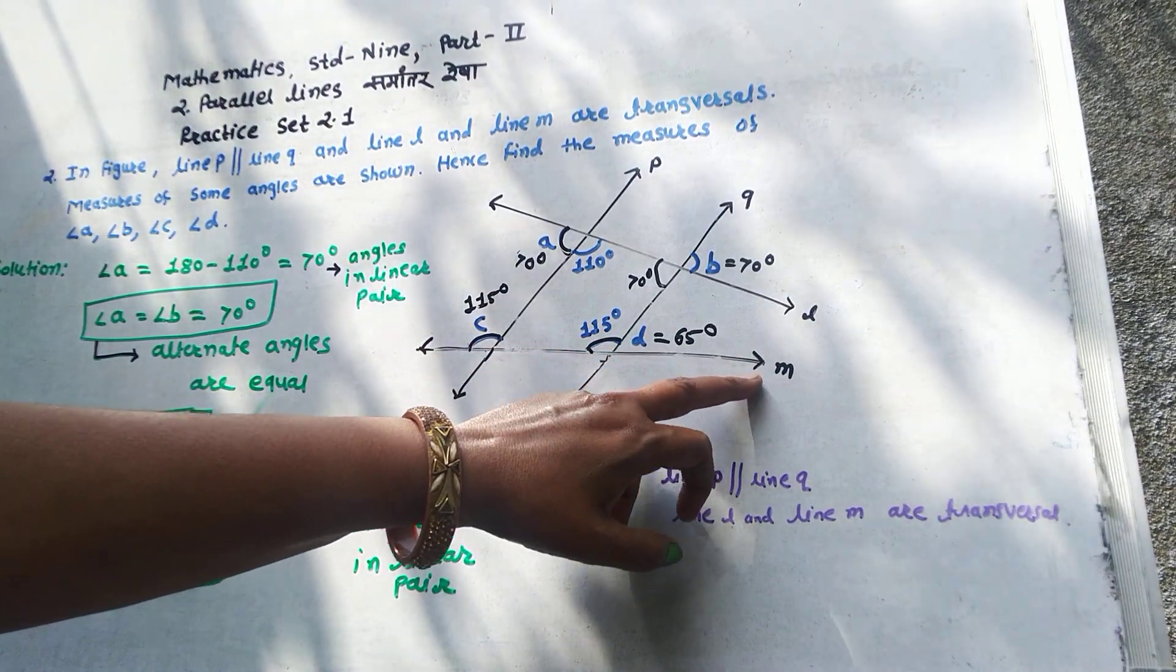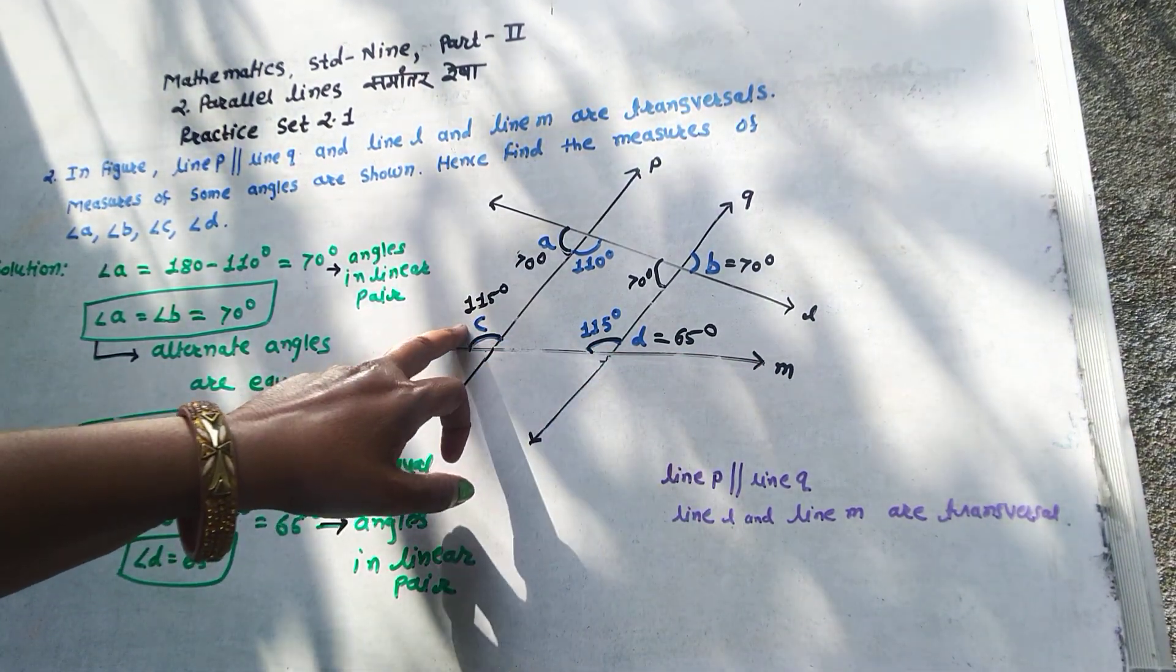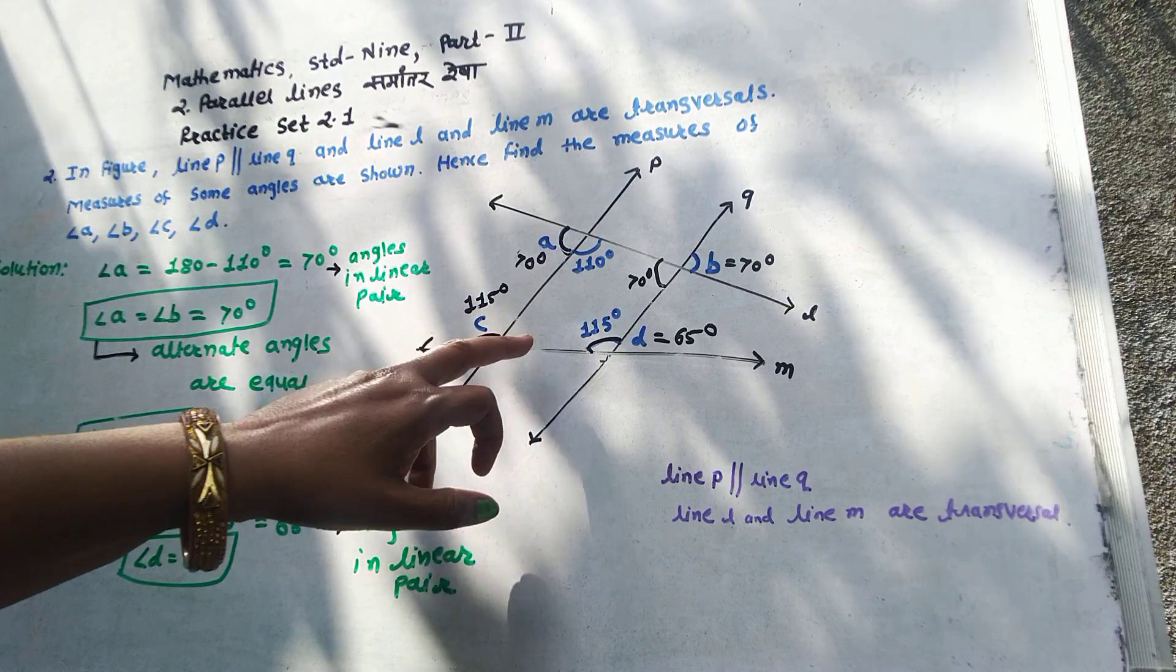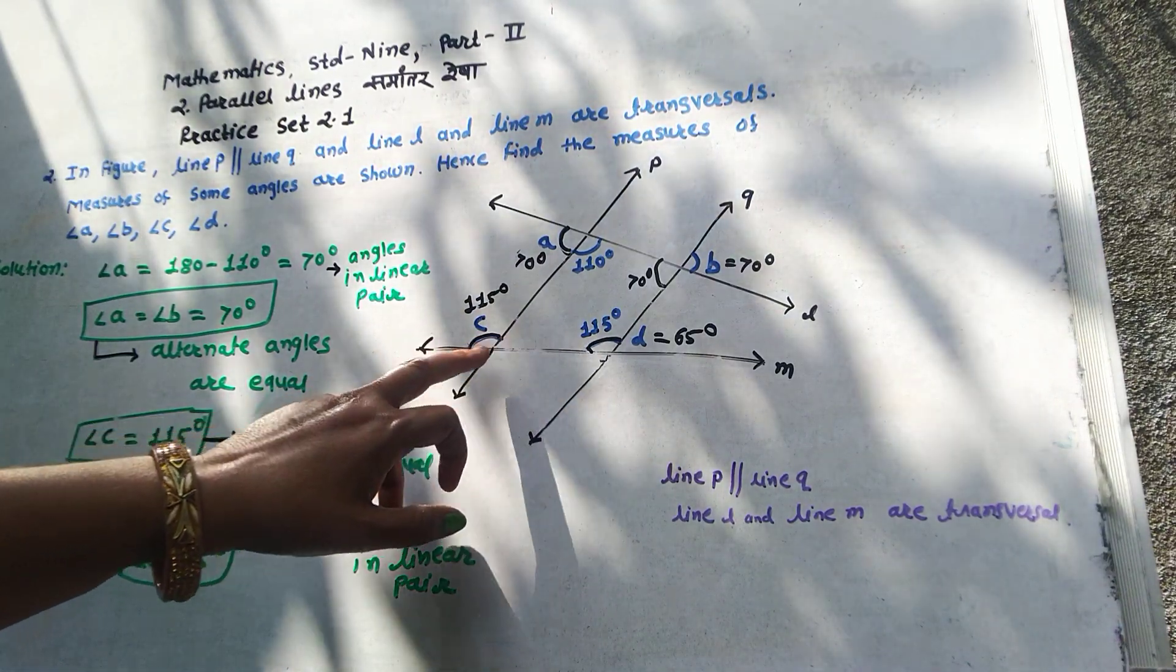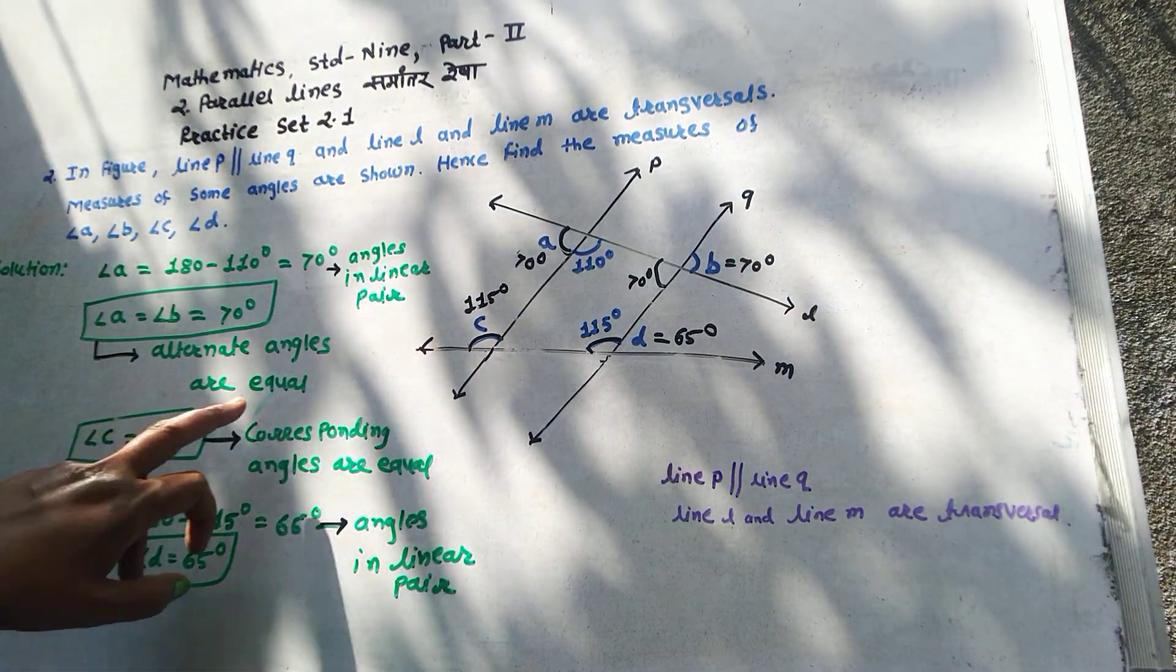Now consider transversal M. Here, these angles and these angles are corresponding angles, and corresponding angles are congruent. Therefore, angle C is equal to 150.